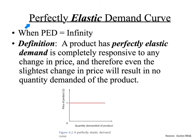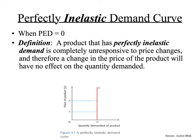One of the fairly theoretical values is a demand curve that's perfectly elastic. That's when PED, or price elasticity of demand, equals infinity. A product with perfectly elastic demand is completely responsive to any change in price, and therefore even the slightest change in price will result in no quantity demanded of the product. In contrast, the perfectly inelastic demand curve is where price elasticity of demand equals zero, and a product with perfectly inelastic demand is completely unresponsive to price changes, meaning a change in price will have no effect on the quantity demanded.